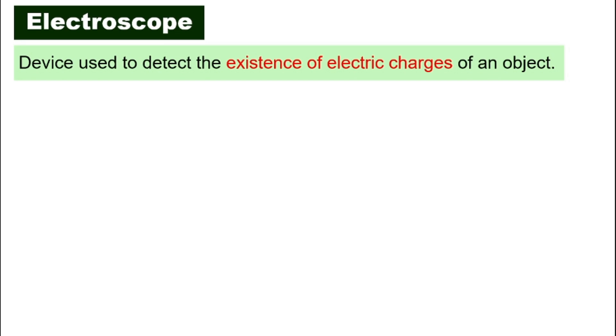How do we know if something is charged — whether it is neutral, positive, or negative? We cannot see protons and electrons with our eyes. There is a device called an electroscope. An electroscope is a device we can use to detect the existence of electric charges on an object — to find out if it is neutral or charged.